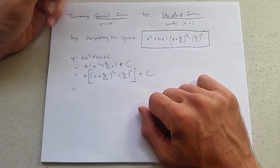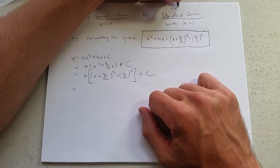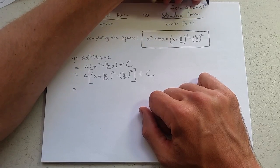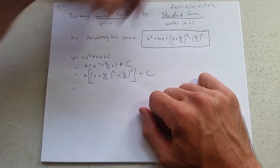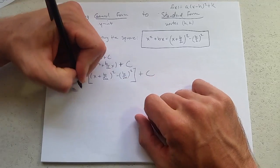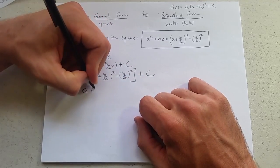And what are we doing? Standard form, what does that look like? f of x equals a times x minus h squared plus k. Alright. So we need to get this out of here. So we're going to distribute the a to both pieces. So we have a...